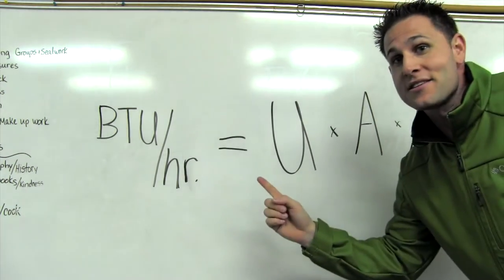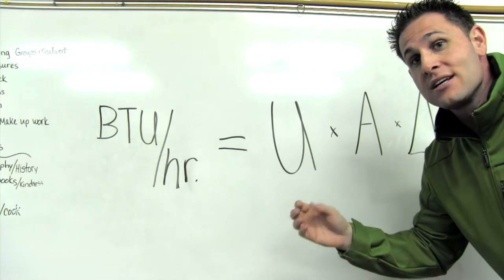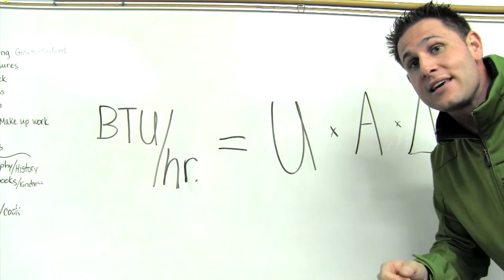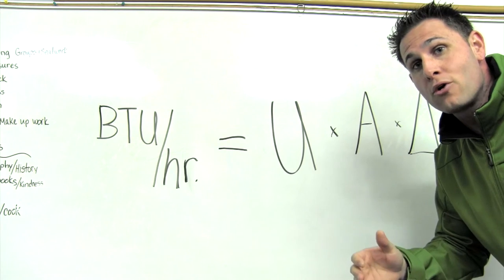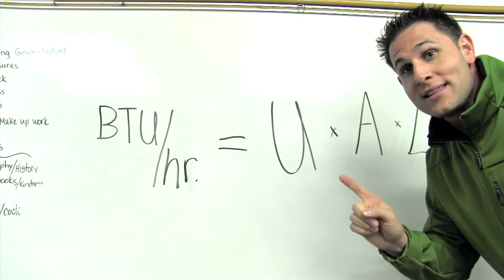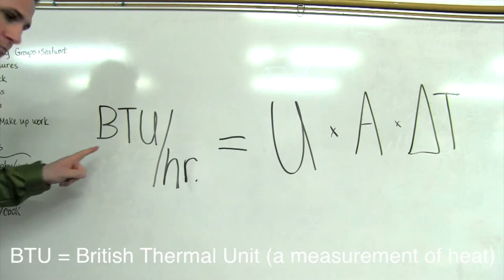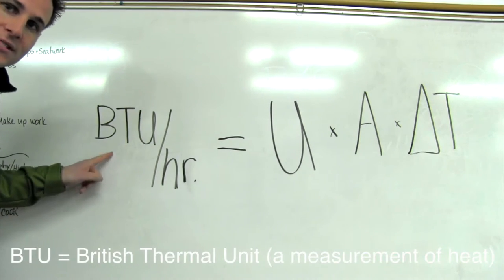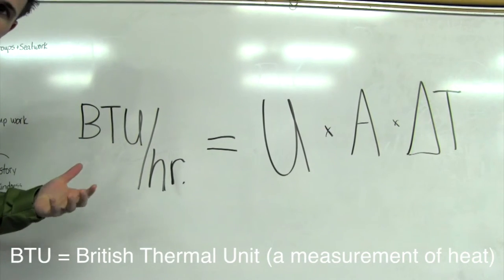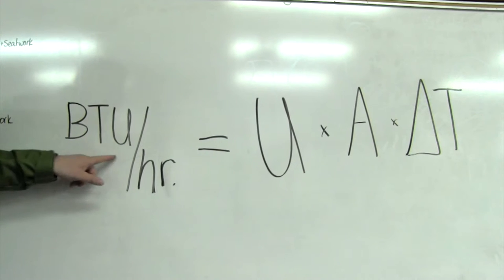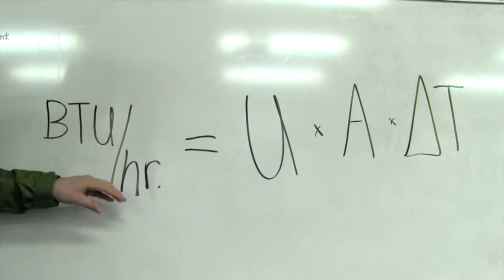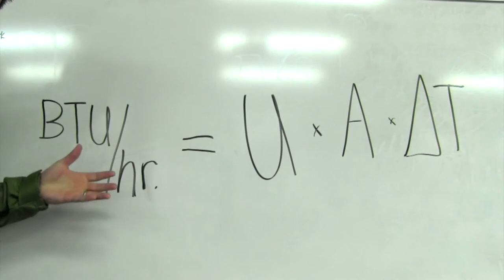Now this is a formula that we use to calculate how much heat energy is going to leave our home or our school over a period of time. Let me break it down for you. BTU stands for British Thermal Unit and it's a common measurement of heat. BTU per hour means heat over an amount of time — one hour.